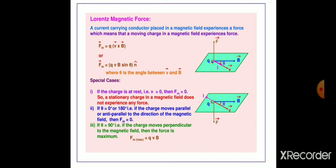If the charge is at rest, that is, velocity is equivalent to 0, then Fm is equivalent to 0. So, a stationary charge in a magnetic field does not experience any force.